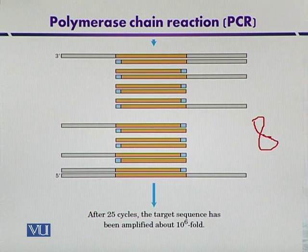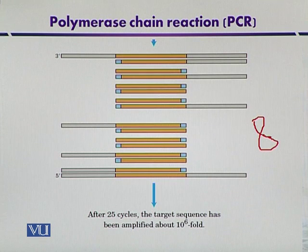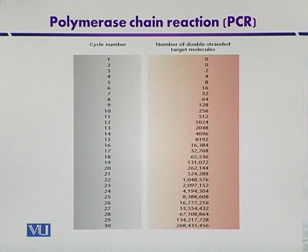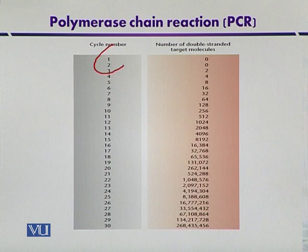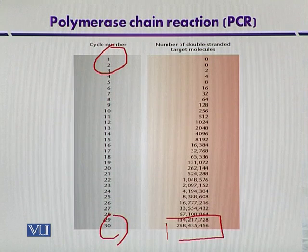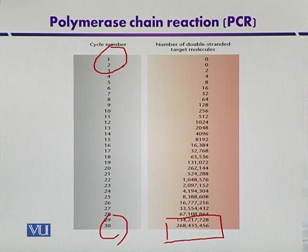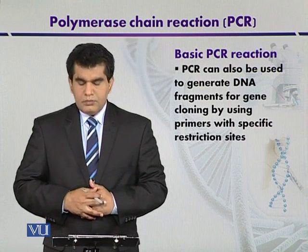If we start from one fragment and observe after 25 cycles, the DNA yield is around 10 to the power of 6 fold compared to the first step — a huge quantity of DNA can be produced using PCR. In quantitative terms, starting from a few fragments and up to 30 cycles, we get a huge amount of DNA fragments. The increase is exponential: one segment produces two, two produces four, four produces eight, and so on.